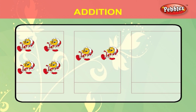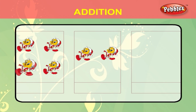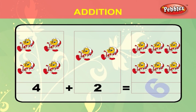Take the next example. There are 1, 2, 3, 4 tweety birds in the first box and 1, 2 tweety birds in the second box. 4 plus 2 is equal to 6.